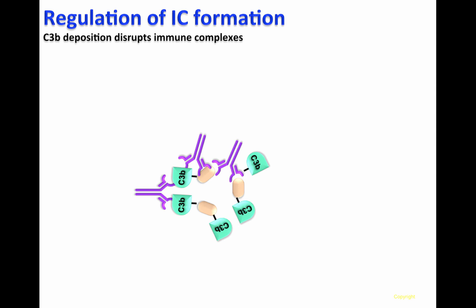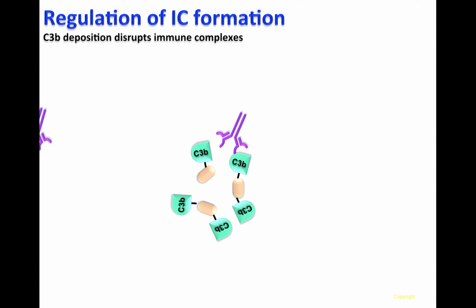Therefore, C3B deposition disrupts immune complexes, as you can see here in the video. And the consequence is the reduction of immune complex formation. This process is constantly happening in our body. The antigen covalently bound to C3B will later be phagocytosed.